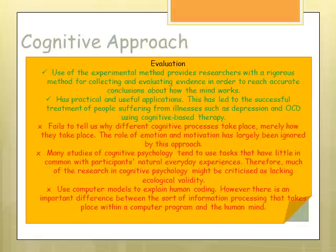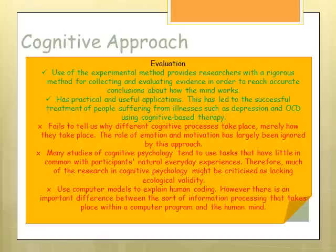Strengths of the cognitive approach include the use of experimental methods — it is very scientific and rigorous in collecting and evaluating evidence, increasing internal reliability and validity. It has very useful applications, being useful in treating illnesses such as depression, OCD, and schizophrenia with CBT (cognitive behavioural therapy), meaning people are more likely to be able to go out to work and contribute to the economy, showing the importance of psychological research in society. However, it only says that these processes take place — it doesn't tell us why they take place — and doesn't pay much attention to the role of emotion or motivation.